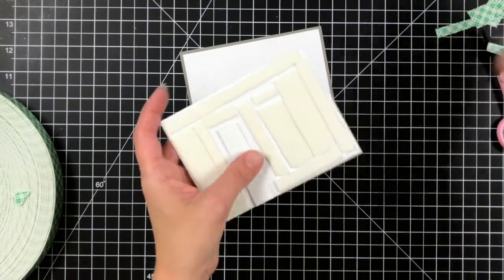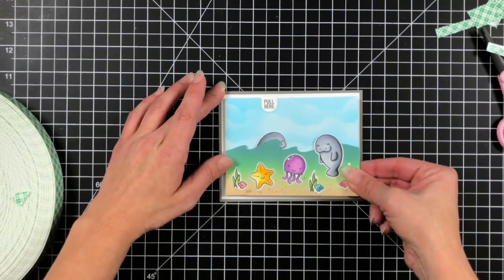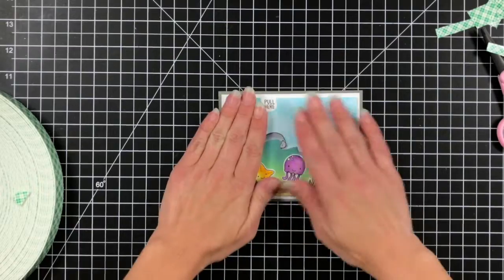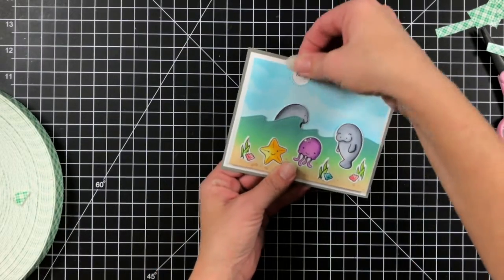So once I have the release paper removed, I can attach that to the front of the card. And I'll give it a test run, make sure everything is working smoothly.